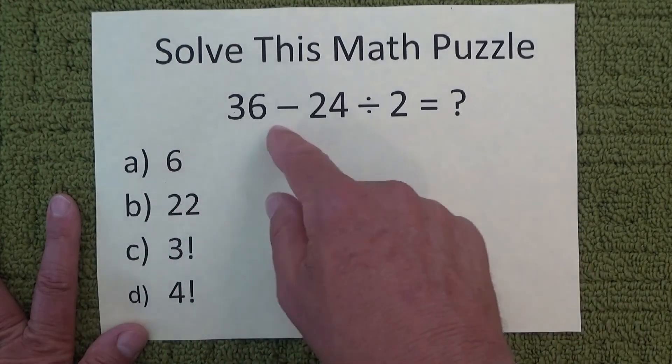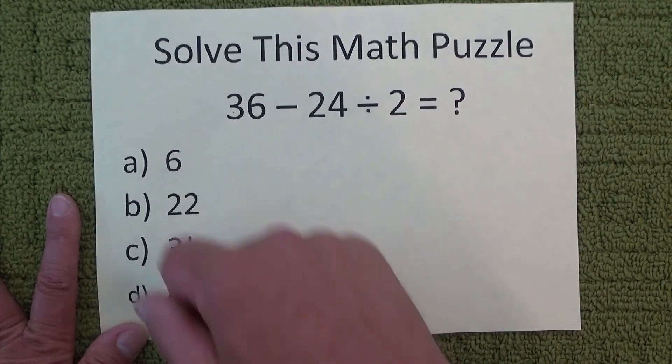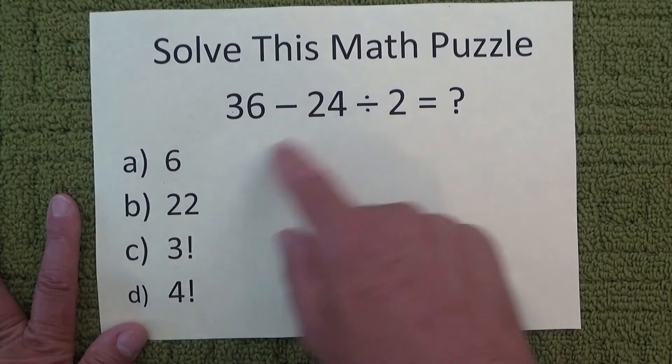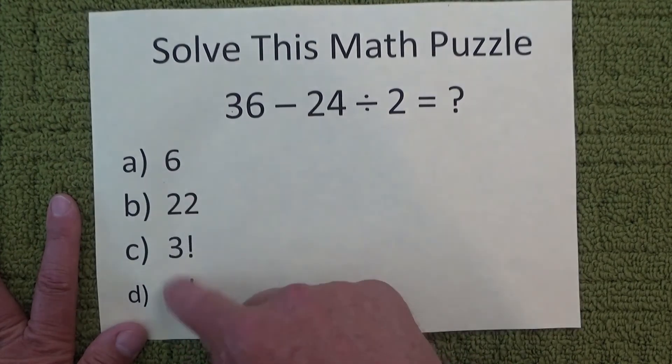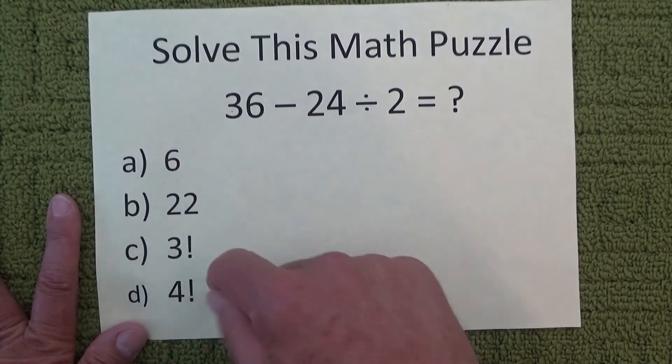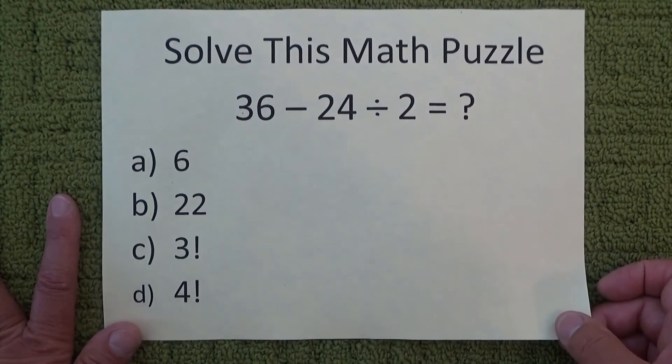So you're giving people the chance to select the wrong answer by not giving them the 24 up front and then giving them the 6 and also the 3!.